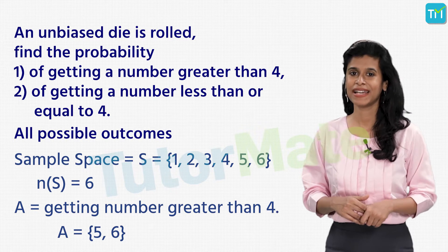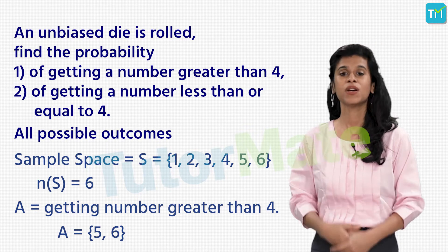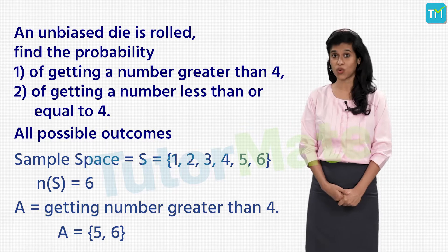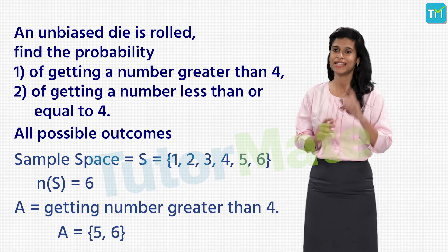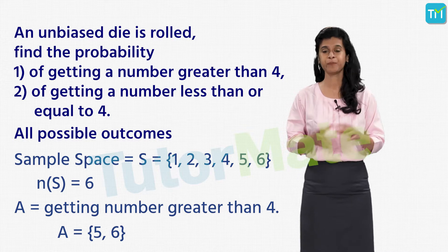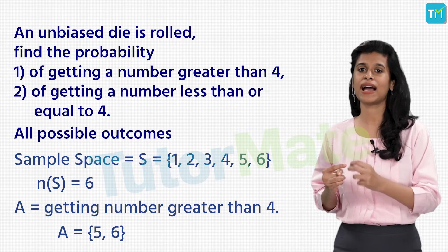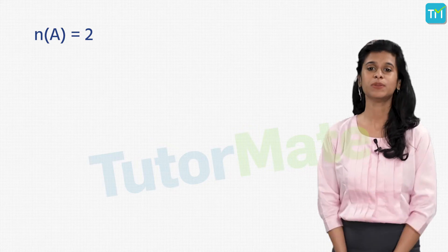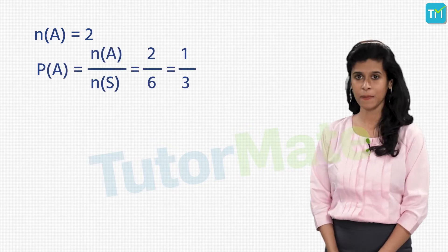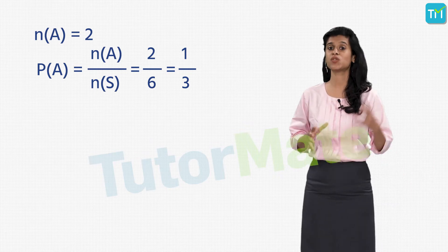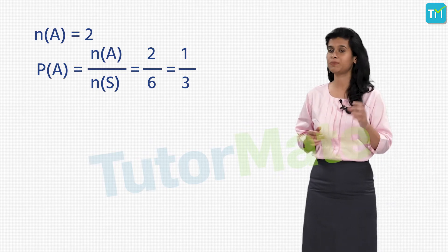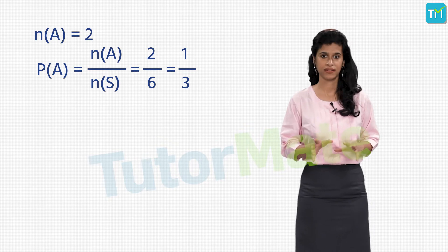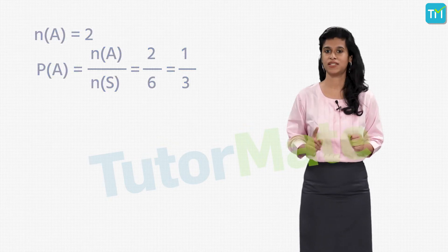In fact, just read the question again. We want a number greater than four, not greater than or equal to four. So now can you answer my question? That's right, four will not be included in the outcome of this event. And so A will only have the two numbers five and six. That gives us n(A) = 2. Now the probability of A is equal to n(A) / n(S). Substituting the values of n(A) and n(S), we get P(A) = 2/6 = 1/3, and that is the probability of our first event.